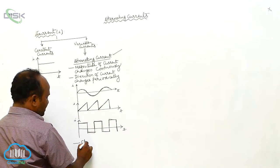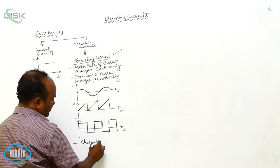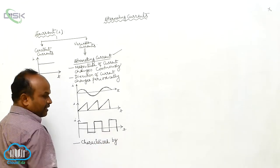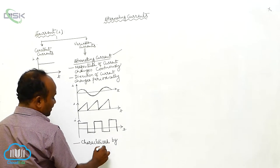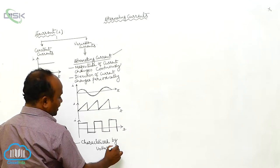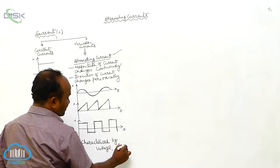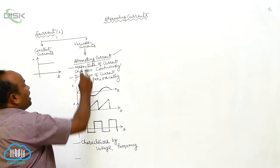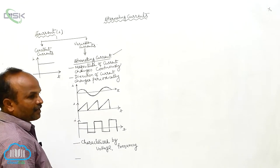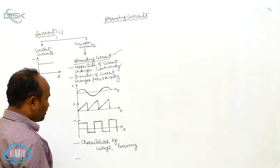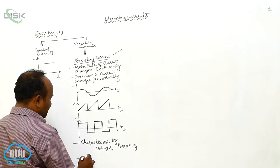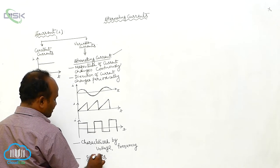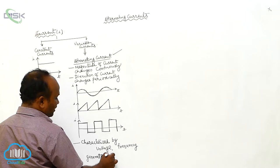Every alternating current is characterized by voltage and frequency. These alternating currents are produced by generators, or otherwise alternators.